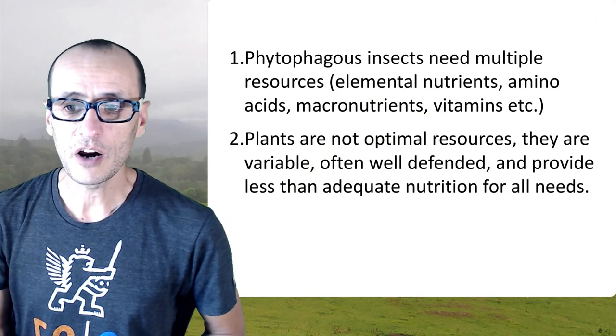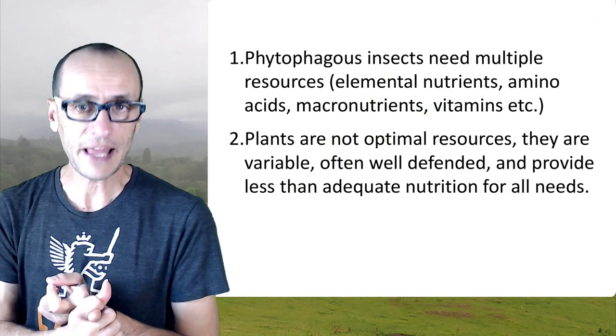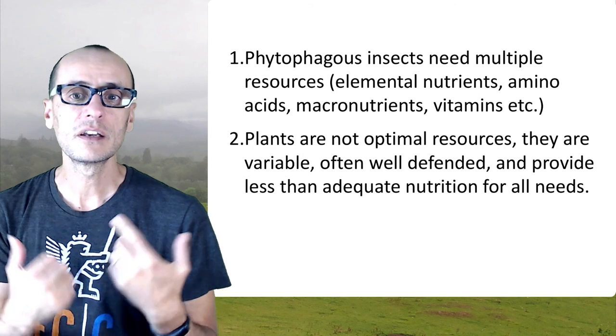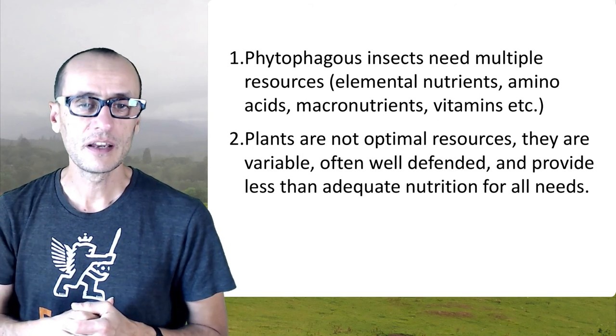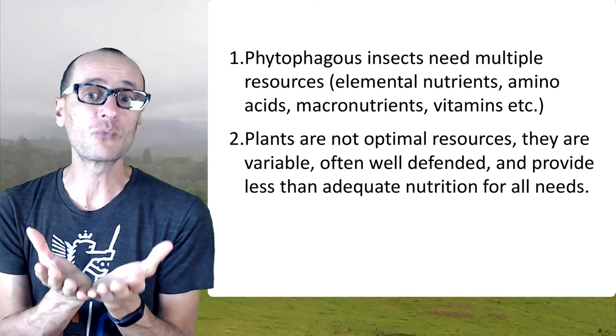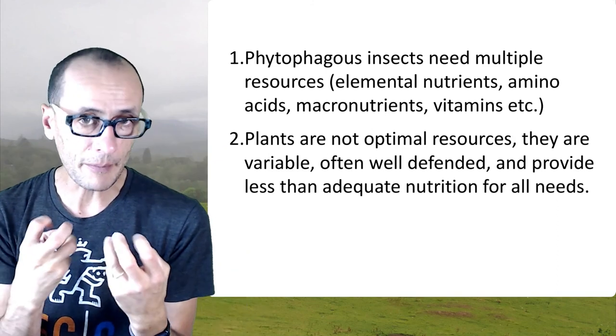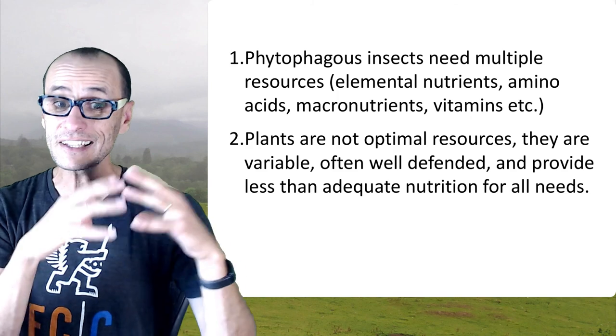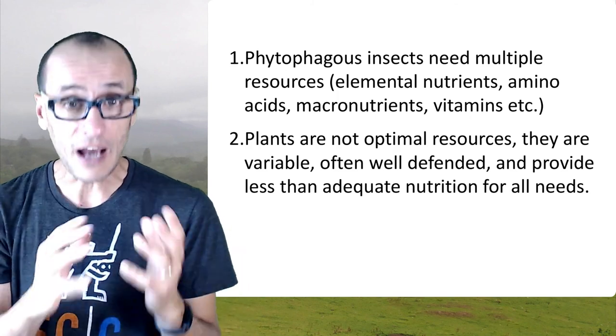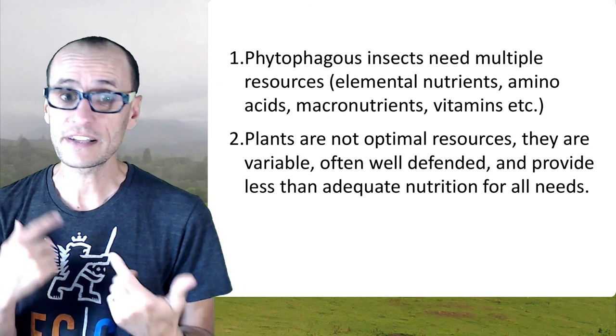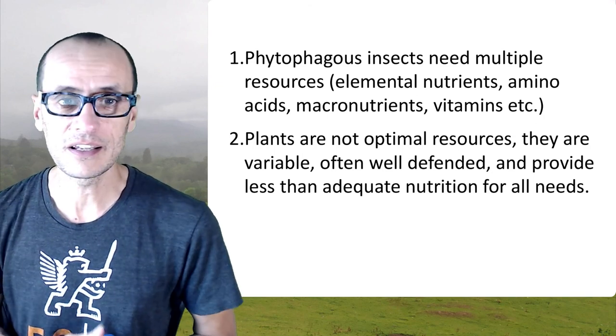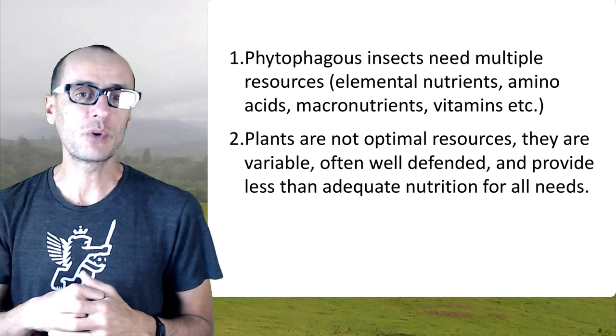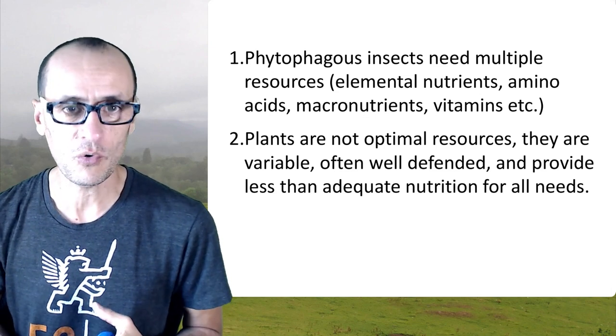So the take-home messages here are that phytophagous insects, plant-feeding insects, need multiple resources in order to develop both the elemental nutrients, amino acids, macronutrients, vitamins, and so on. And that it's the combination of all these together that really matters for insects. So the stoichiometry, the relative ratios that they're encountering, that matters to them. And that the food resources that they feed on, plants primarily, are not optimal for them. They're variable, plants are often well defended, and not all carbon is potentially usable, and not all nitrogen is potentially usable. And therefore, they provide less than adequate nutrition for all the needs. And this creates a challenge for insects.